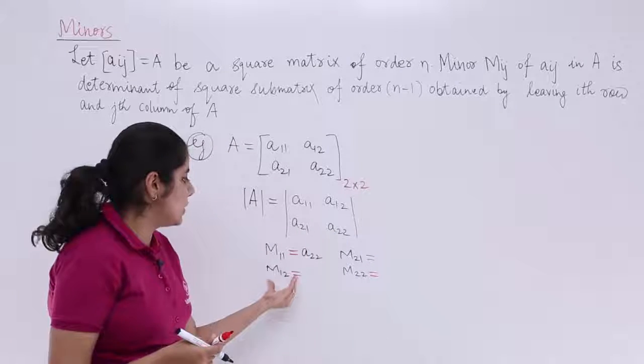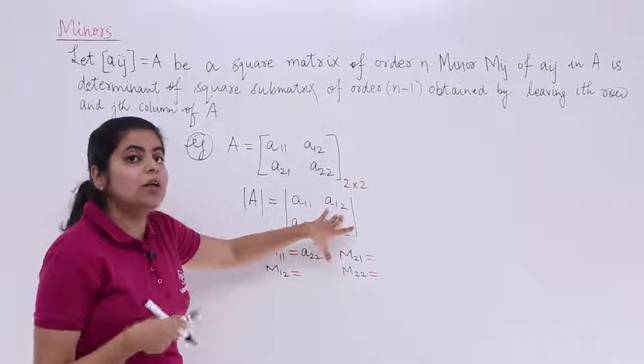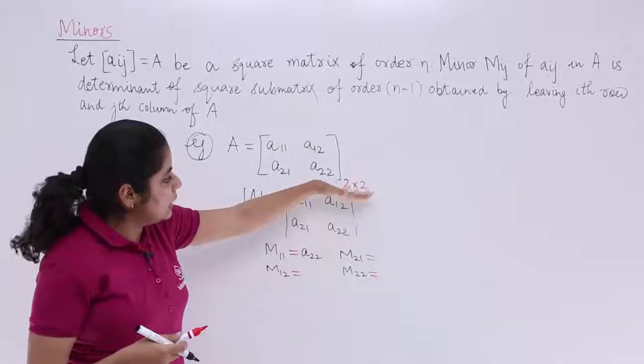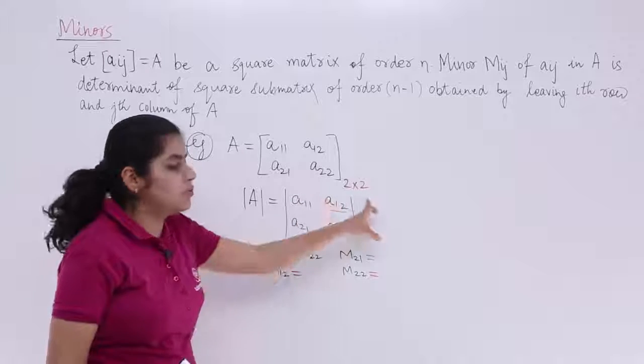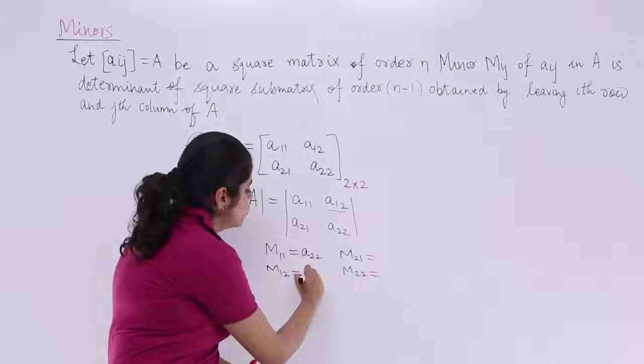Now let's move to the other thing that is M12. M12 is related to A12. What is the criteria? Leave this column and this row. Why? Because A12 is present here at the junction of the first row and the second column. What is left? A21. Write the answer as A21.